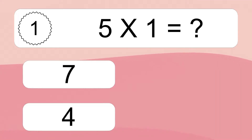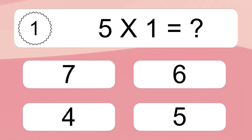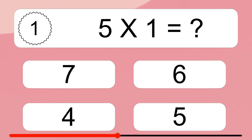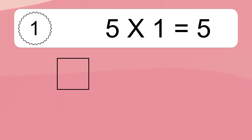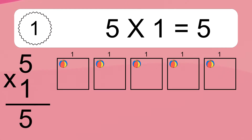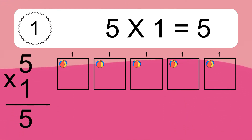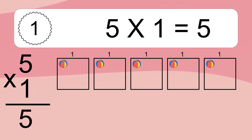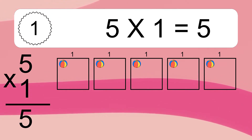Five times one equals what? Five times one equals five. We have five boxes and each box has one colorful ball inside. If you count all the balls in all the boxes together, you will have five times one balls. This equals five balls.